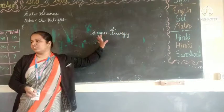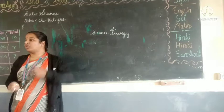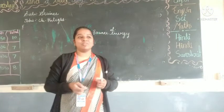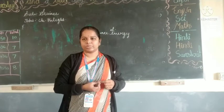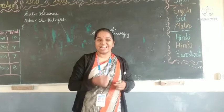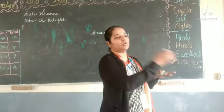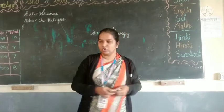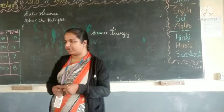First we have to talk about luminous objects. What is meant by luminous object? Objects that produce their own light. The objects that produce their own light, we are calling them luminous objects.